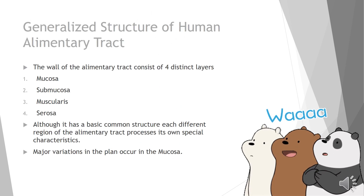Now, the generalized structure of the human alimentary tract. Everything in our body has a generalized structure, and the alimentary tract consists of four distinct layers: mucosa, submucosa, muscularis, and serosa. Although there is a basic common structure, at particular regions this general structure is specialized.